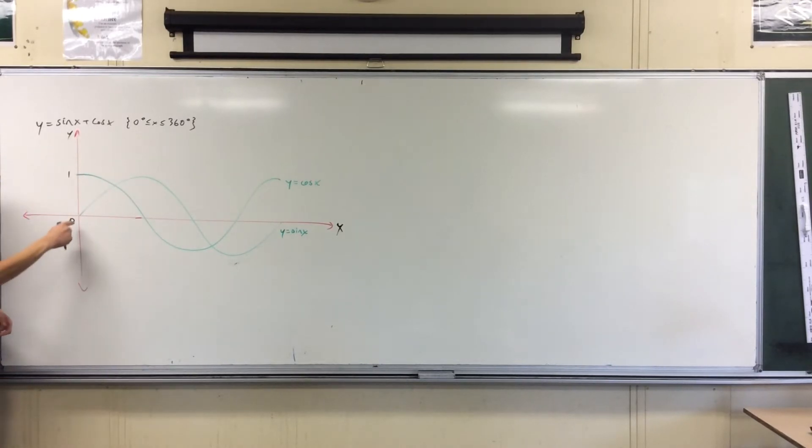Example, here at x equals 0, the sine graph is equal to 0, but the cos graph is equal to 1. So when I add up 0 plus 1, I get 1. So I'm passing through that point. There's a few other points that are just the same.